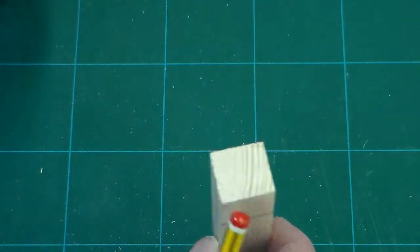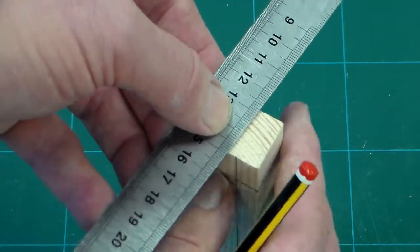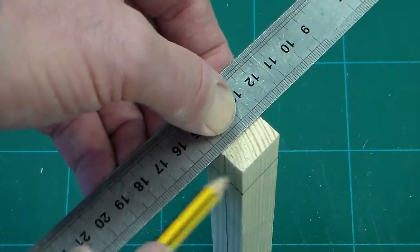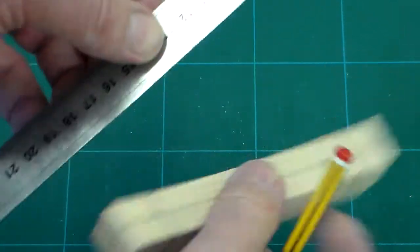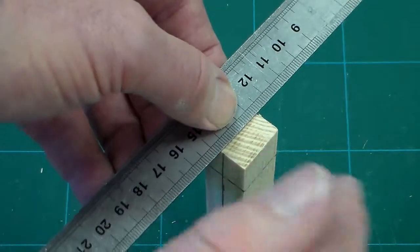Once we've done this, the last two stages is to take a steel ruler to line up with our face here and draw ourselves a line on the end grain. We need to do that twice.